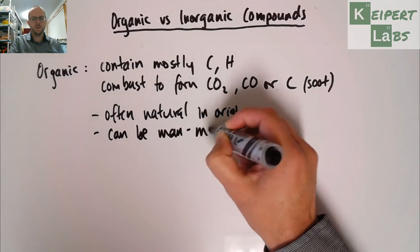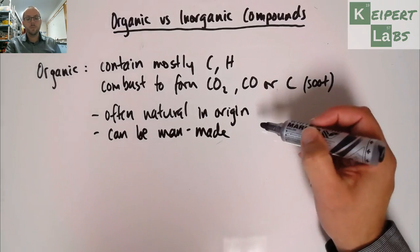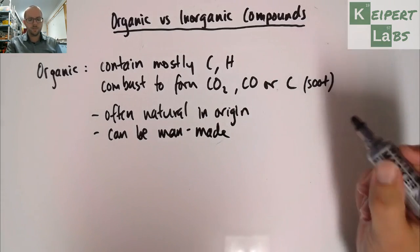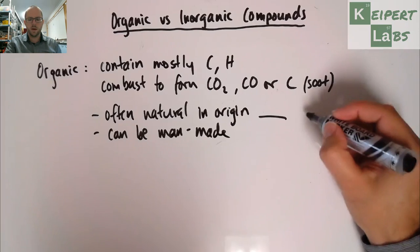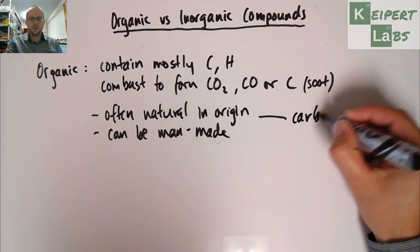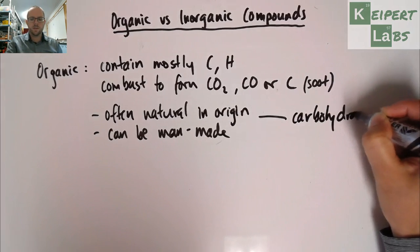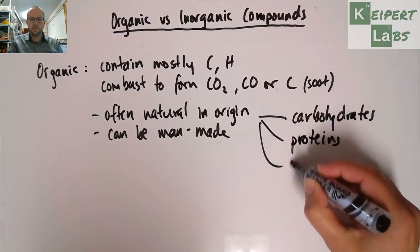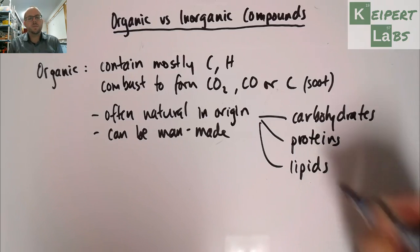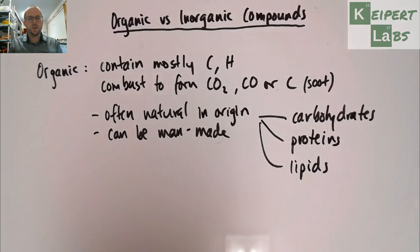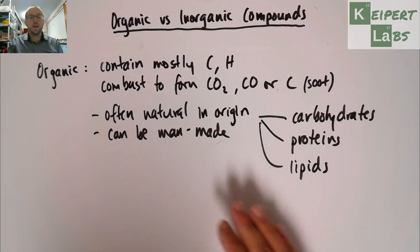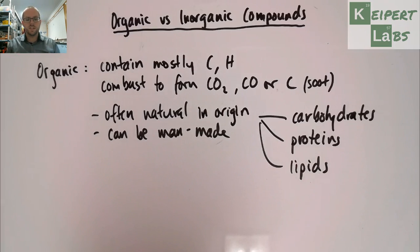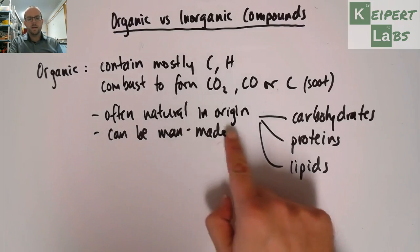From a forensic point of view, lots of the ones that we would be considering are natural in origin. Some of the examples that we might have, and we're going to look at in some level of detail, we've got carbohydrates, proteins, and lipids. There's some examples of different things that are natural in origin that might be present in samples that we're testing. But lots of organic substances, organic compounds that we come across would be man-made.